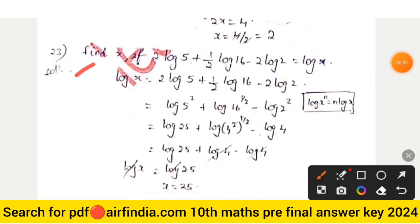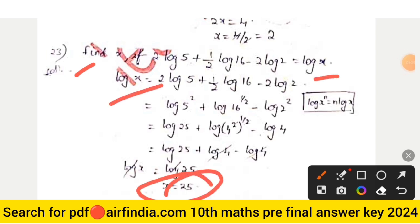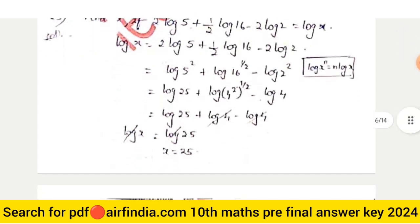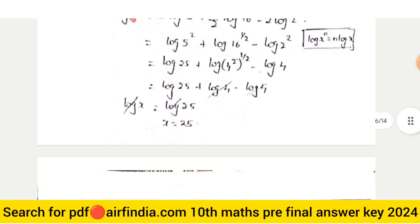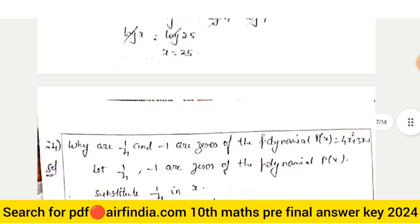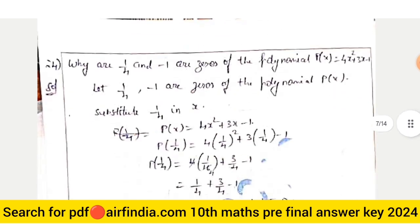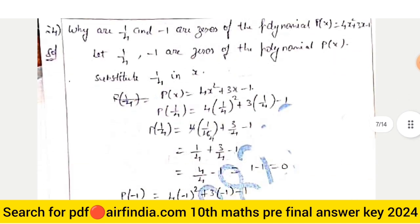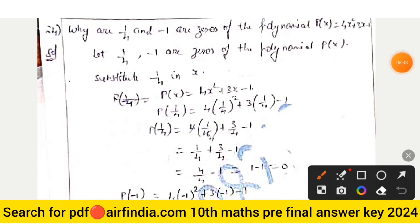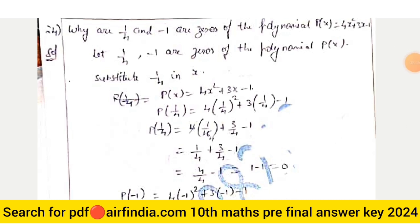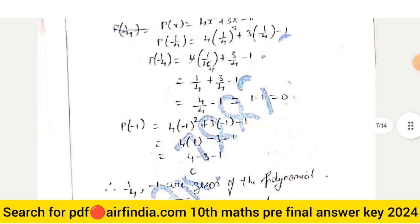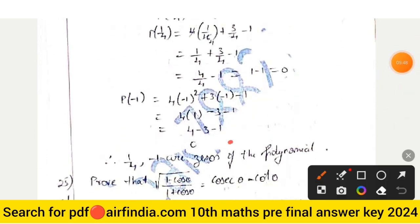Question 23: find x if 2 log 5 = log x. So log x = log 25, meaning x = 25. Question 24: the value of V is equal to 0 — zeros of the polynomial.